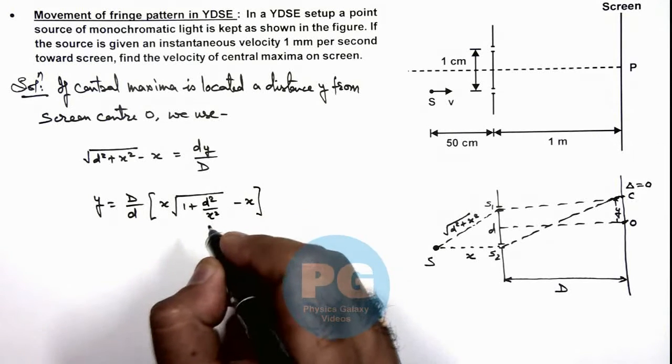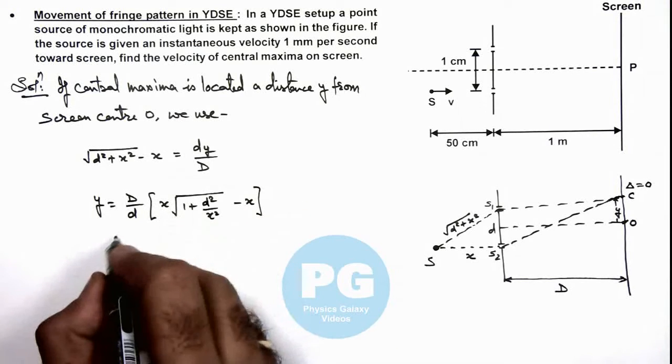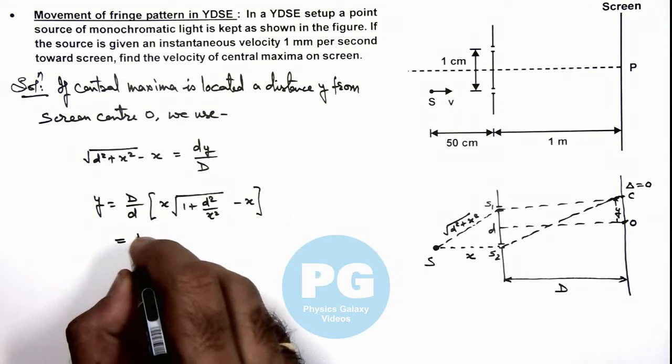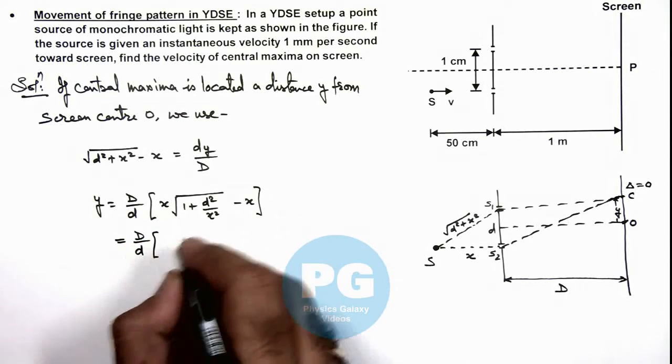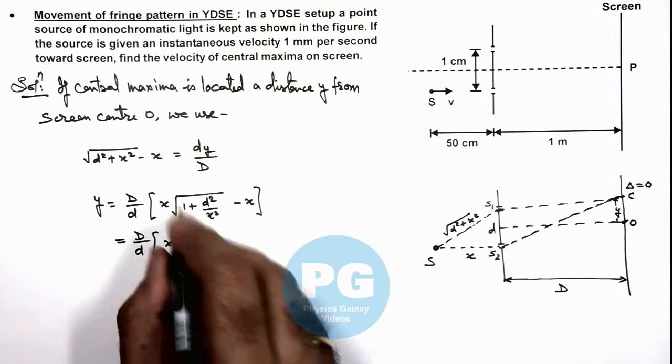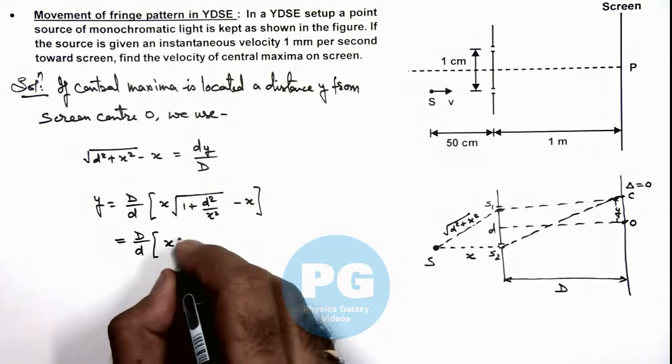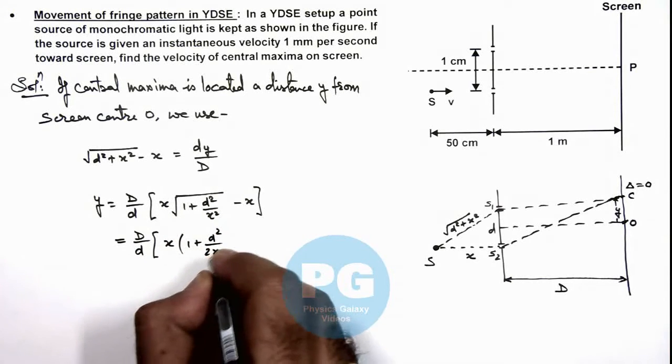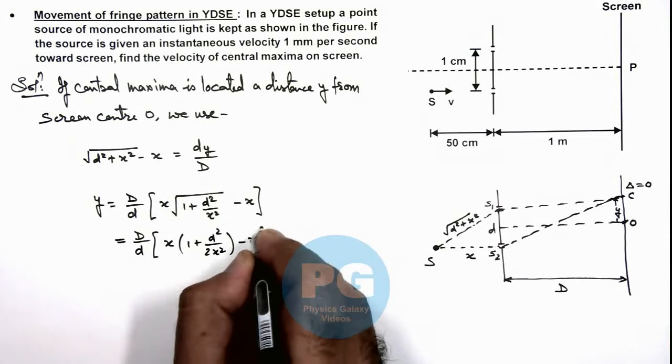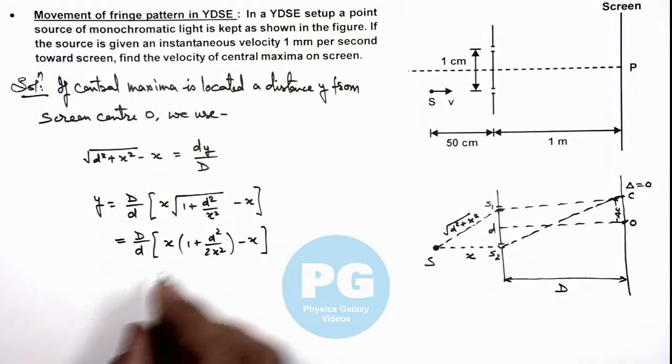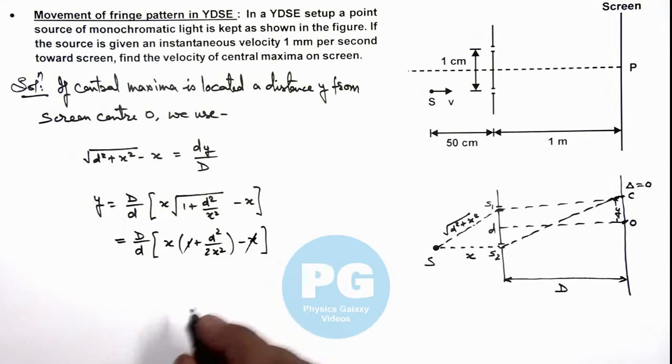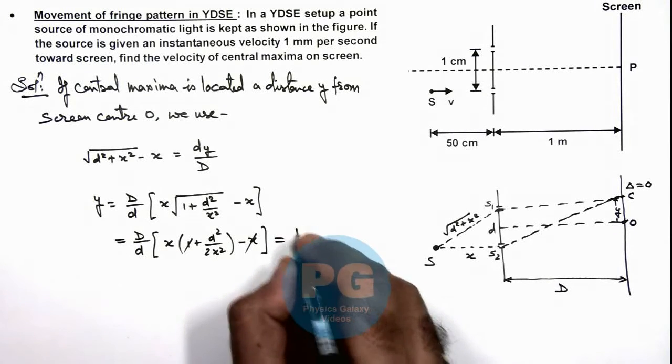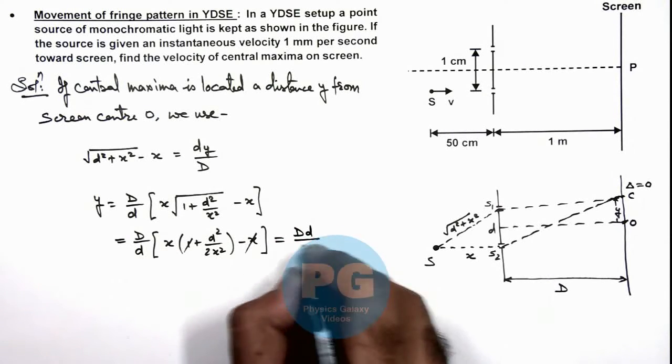And in this situation we can further use binomial expansion for this, which gives us D by d multiplied by x times 1 plus d squared by 2x squared minus x. And here this x and 1 gets cancelled out. After simplifying, we are getting D times small d by 2x.